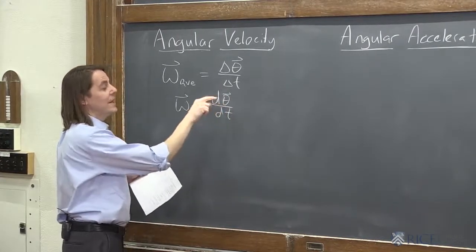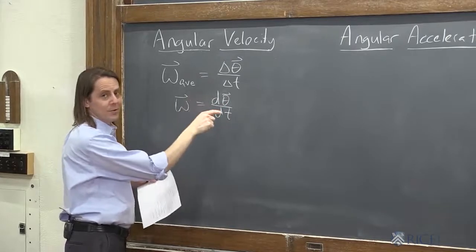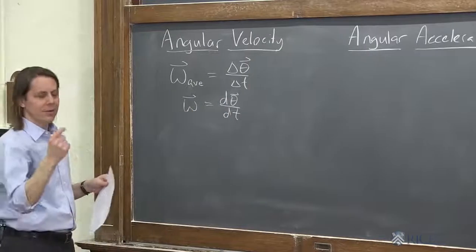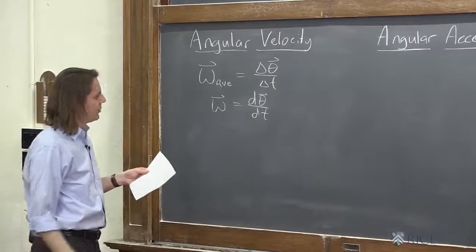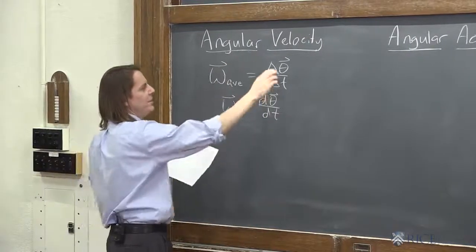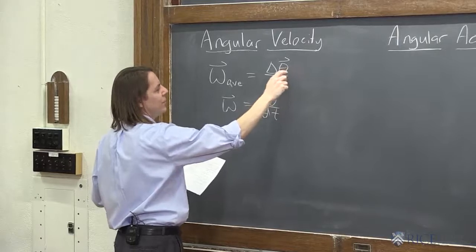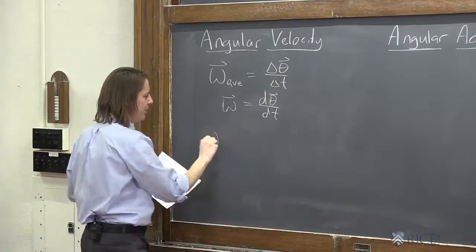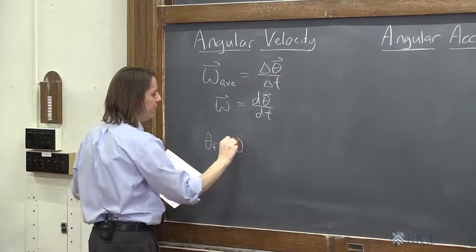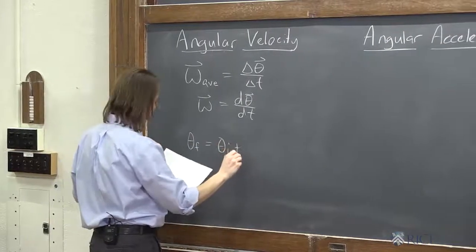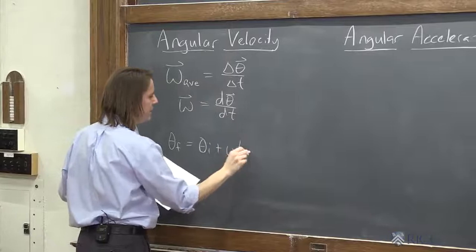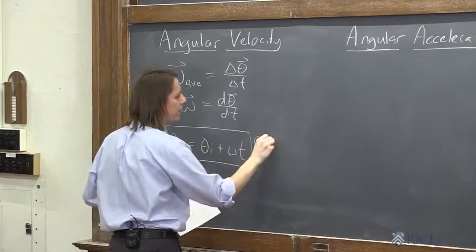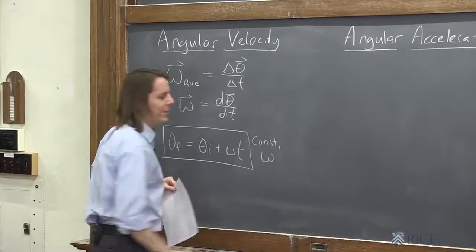This is why we have to know that the angular position is also a vector, because there's no displacement here. It's the infinitesimally small derivative. So one way we use these is for a constant omega, we can take this formula and come up with this. Theta final equals theta initial plus omega t. All right, so that's one of your kinematics equations for constant omega.